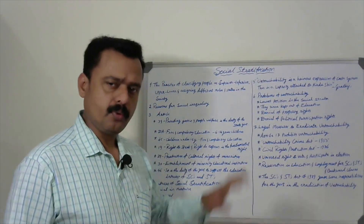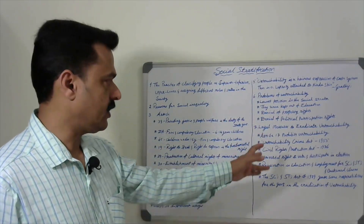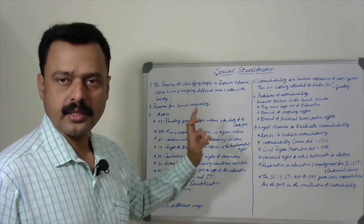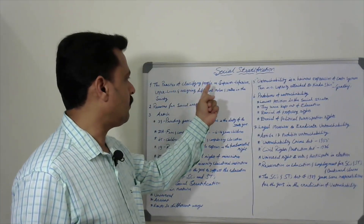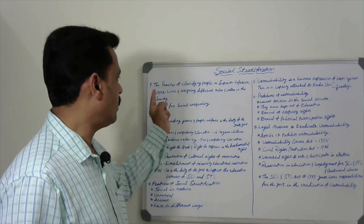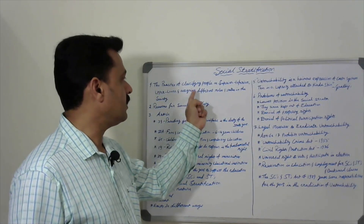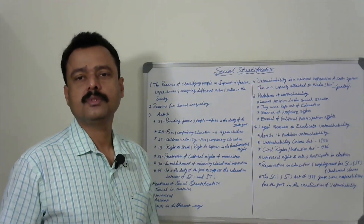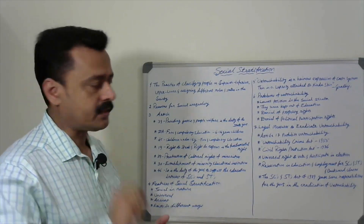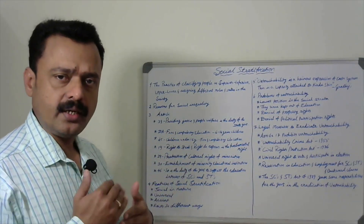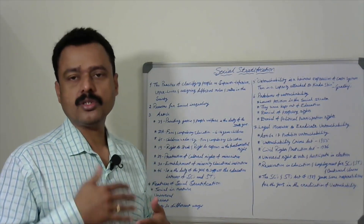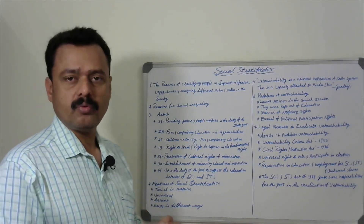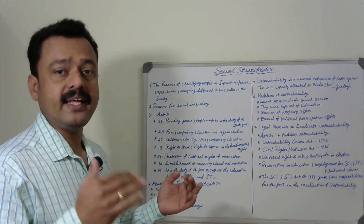This is a very important lesson, so definitely one of our questions will come from this one. Social stratification — what is social stratification? The practice of classifying people as superior, inferior, upper, lower, and assigning different roles and status in the society is called social stratification. 'Strata' means different layers. In society, inequality exists because of gender inequality, education inequality, caste inequality, or income differences.